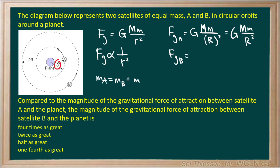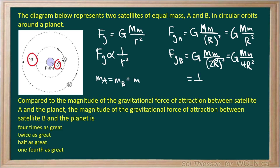The force of gravity acting on satellite B will be GMm — same product of masses, since the planet's mass remains the same and satellite B has the same mass as satellite A. We divide by the distance between the planet and satellite B, which is 2R, since satellite B also follows a perfect circular orbit, squared. Distributing the exponent gives GMm over 4R squared, or one-quarter times GMm over R squared.